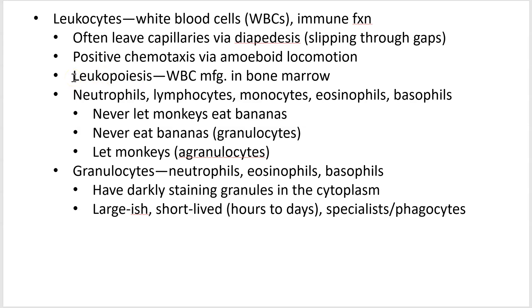Leukopoiesis — that 'poiesis' ending means manufacture of. White blood cells are made in bone marrow, just like any other blood cell, in the red marrow. Some of them mature there; some have to go elsewhere to mature, but we'll cover that in the immune system.